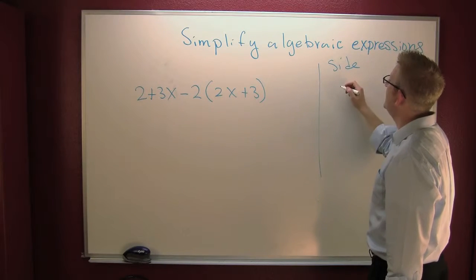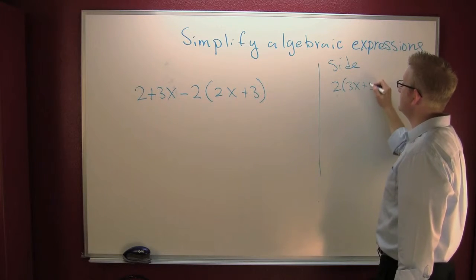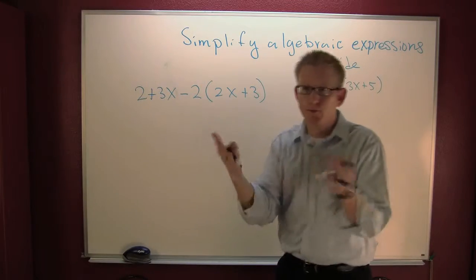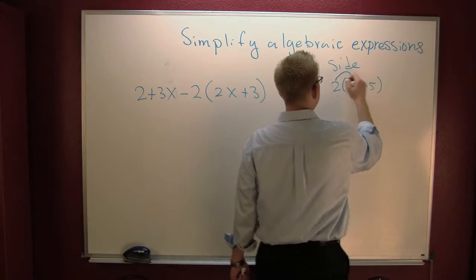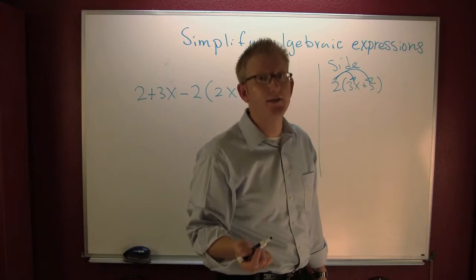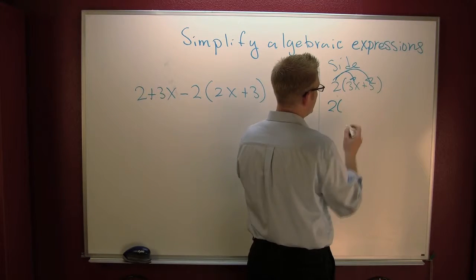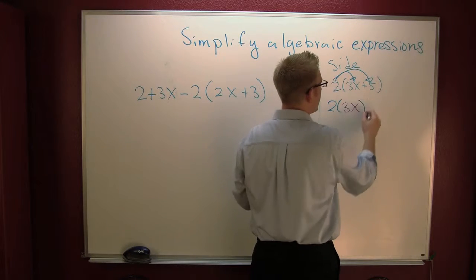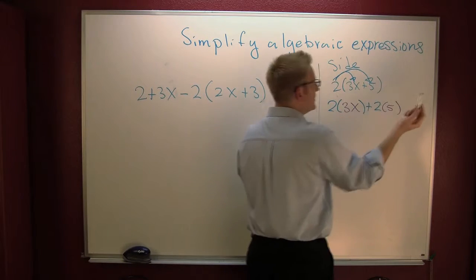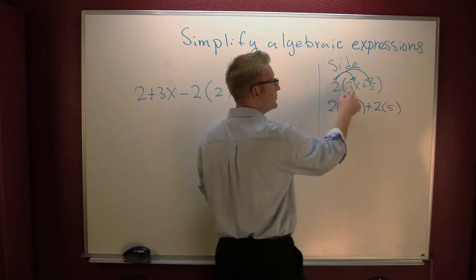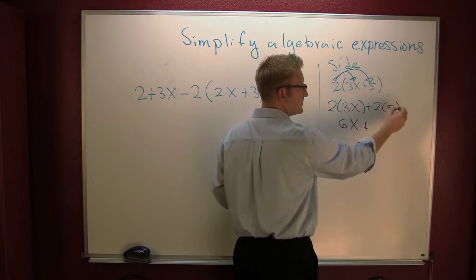Let's talk about distribution over on the side. If I had 2 times (3x + 5) — distribution means it goes to both terms in that binomial. So this is 2 times 3x plus 2 times 5. I changed the colors so you can see that the 2 went to the 3x and that the 2 went to the 5.